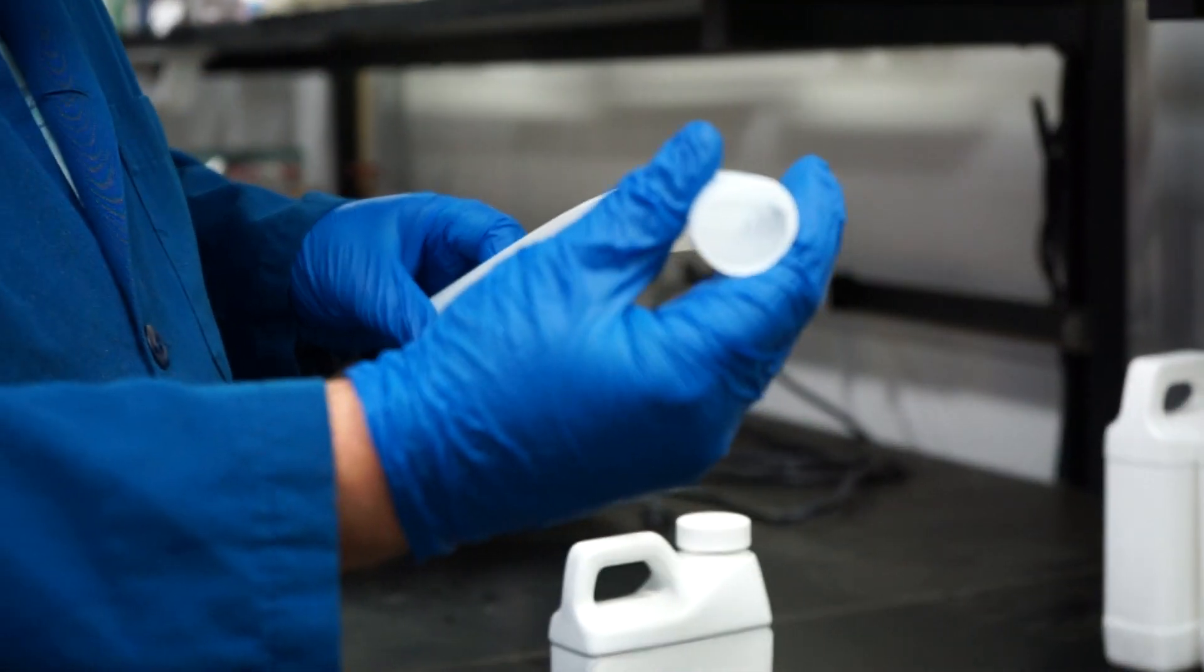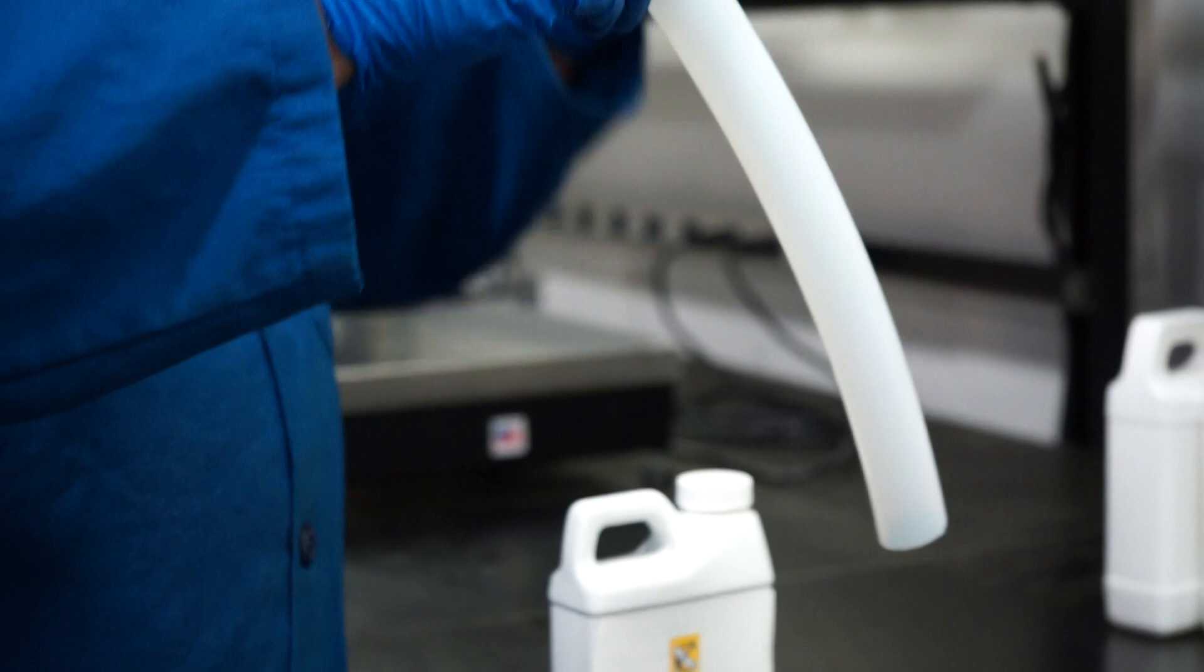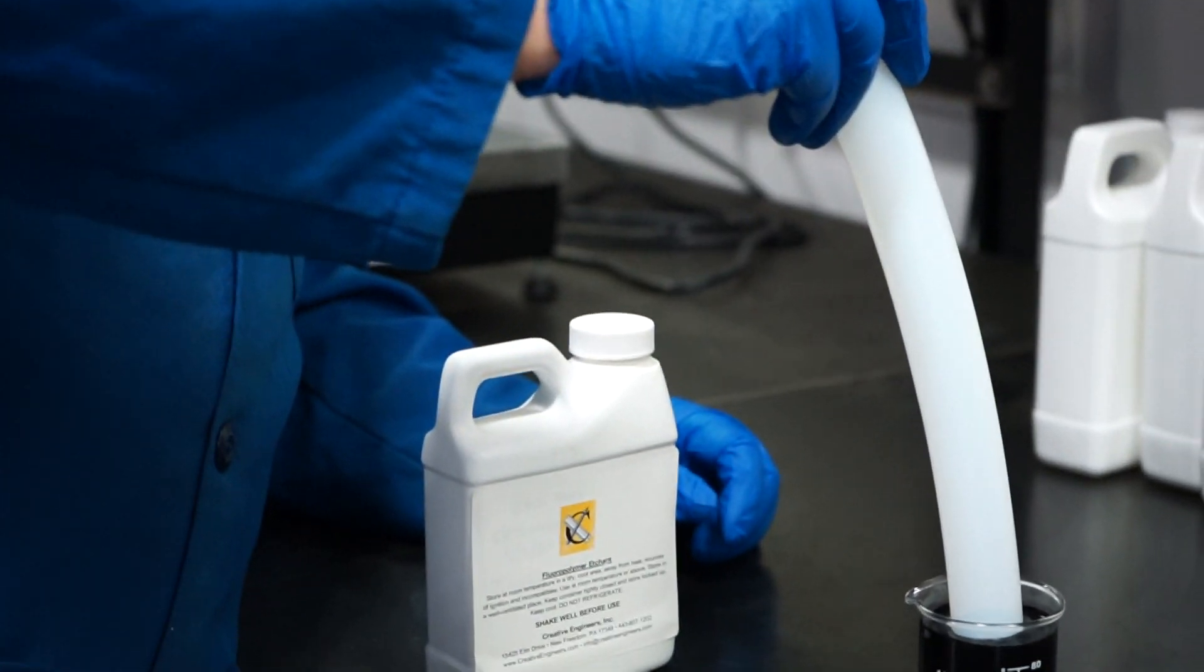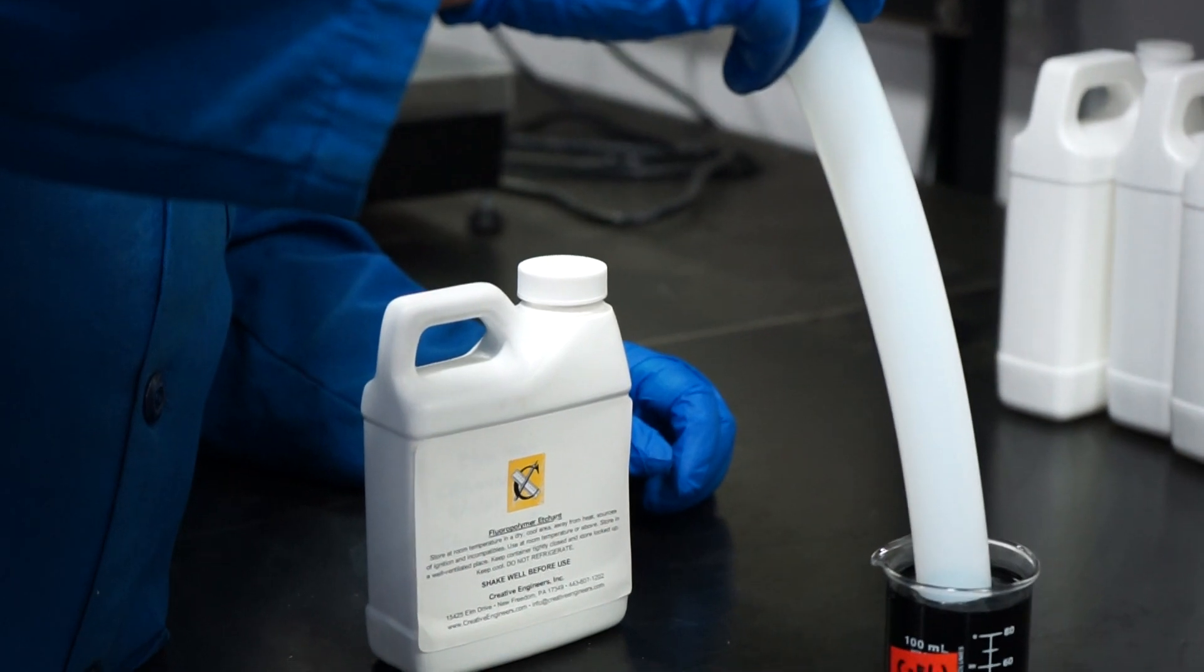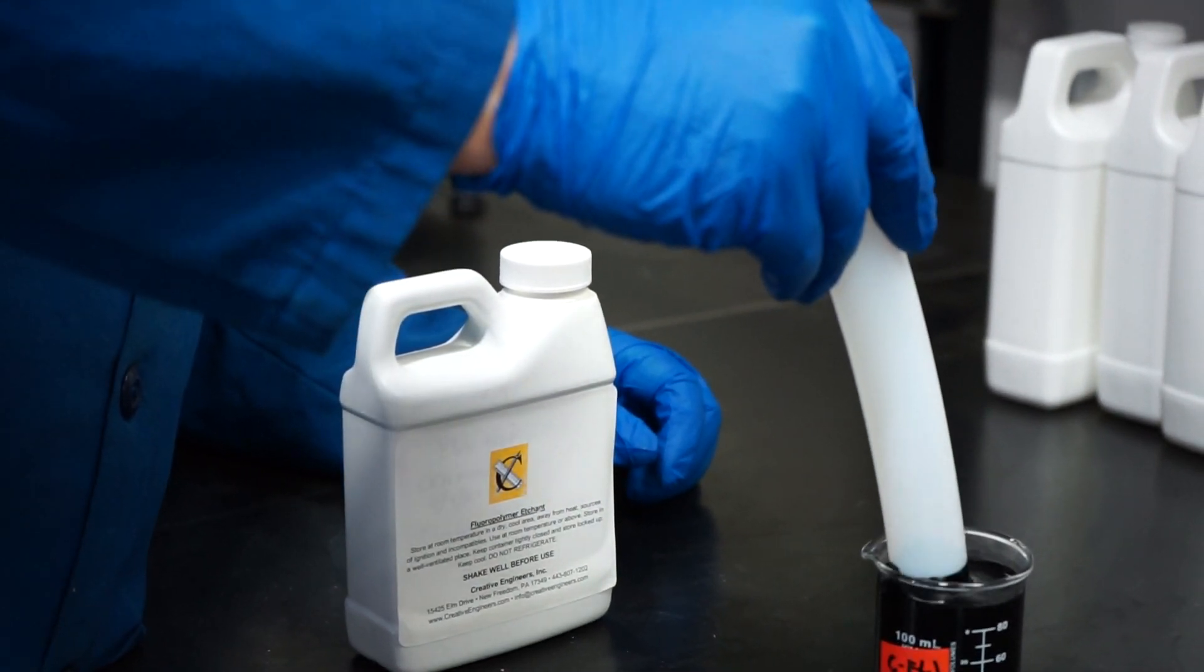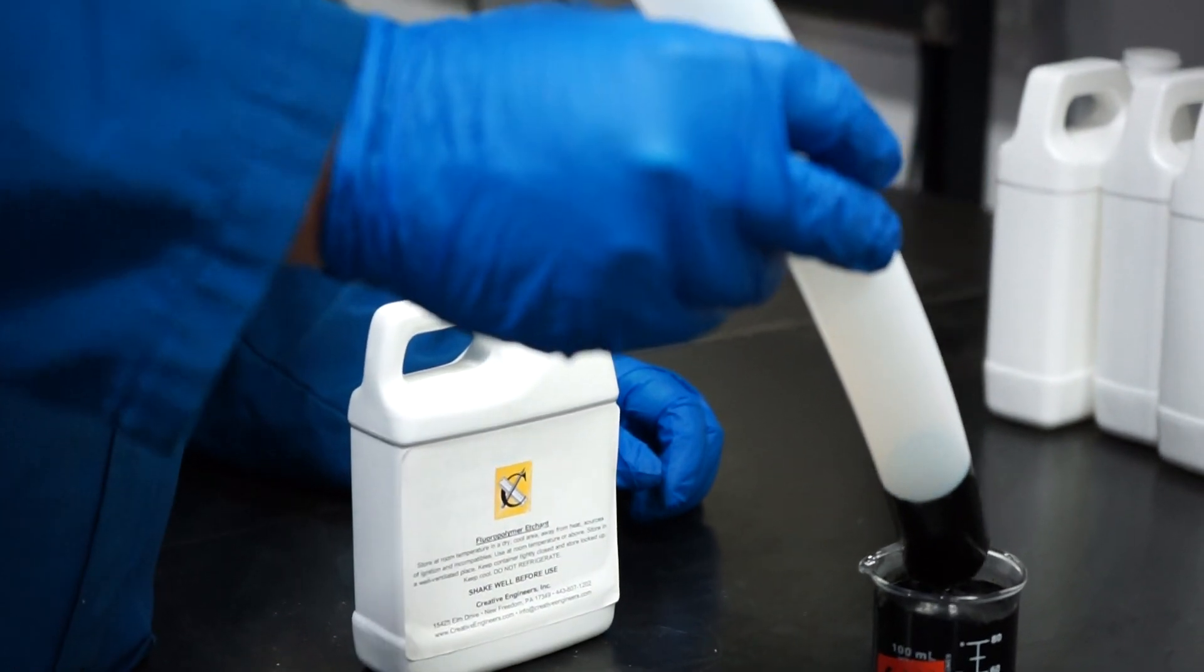So this is a previously untreated PTFE hose. All you have to do to etch is dip the hose in the etch for about 10 seconds and pull it out.